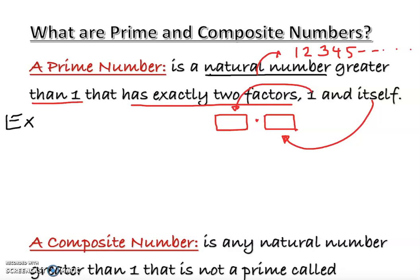Let's start with the first example: is one a prime number? Obviously not, because it fails to satisfy the condition. They said any natural number that is a prime number must be greater than one. One is not greater than one, so we cross it out — this is not a prime number.